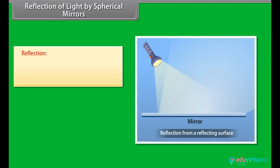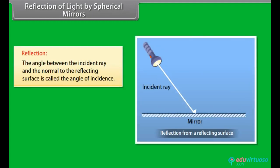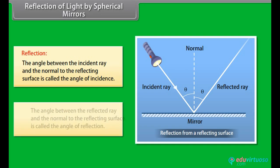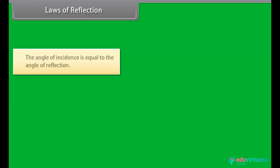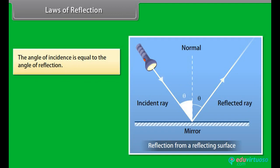Reflection: The angle between the incident ray and the normal to the reflecting surface is called the angle of incidence. The angle between the reflected ray and the normal to the reflecting surface is called the angle of reflection. The angle of incidence is equal to the angle of reflection.